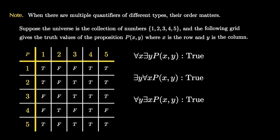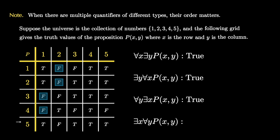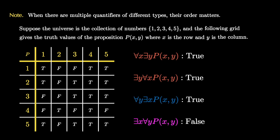Let's switch the order to 'there exists x such that for all y, P(x, y).' This means there is a row such that every single column in that row is true. Going row by row, every single row contains at least one false statement, so there is no row where every entry is true. Therefore this proposition must be false. To recap: the first two propositions were both true even though the order of their quantifiers differed, but they were true for very different reasons. The second pair differed — one was true and one was false — so the order of quantifiers clearly matters.